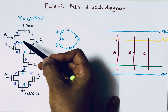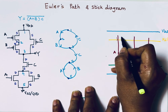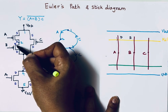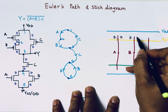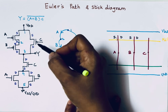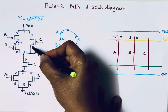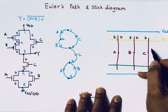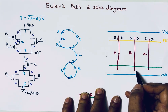In the pull-up network, the drain of A and source of B are connected. So marking drain and source accordingly: drain of A connects to source of B, source of A connects to VDD. The drain of C connects to the drain of B. Connections are marked with a cross symbol. Similarly for the N-channel MOSFETs: drain, drain, source, source, drain, source.